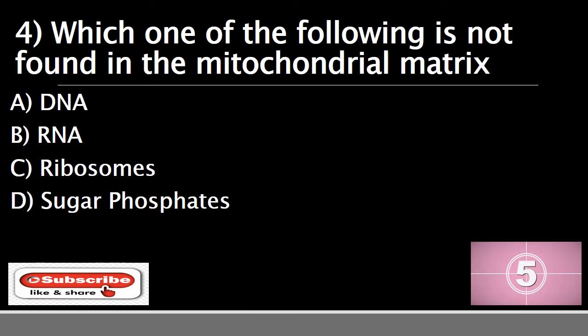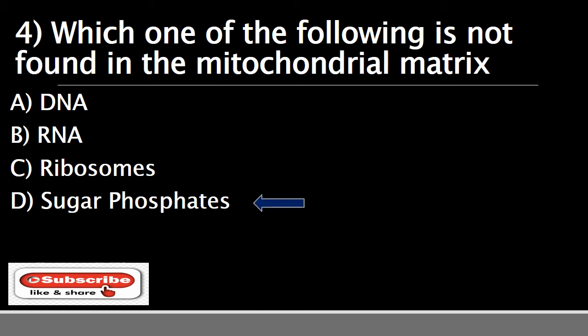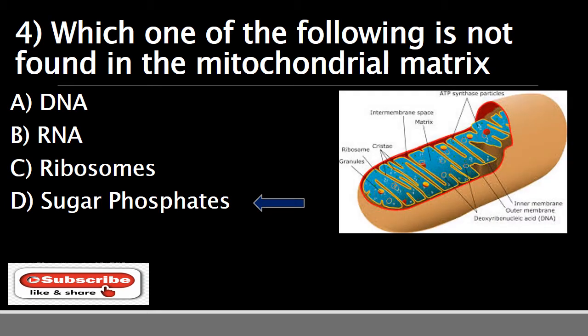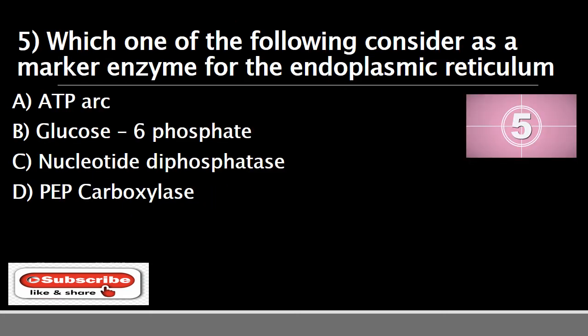Question number four: which one of the following is not found in the mitochondrial matrix? The options are A) DNA, B) RNA, C) ribosomes, or D) sugar phosphatase. The correct answer is D) sugar phosphatase. Sugar phosphatases are phosphoric acid esters of monosaccharides that occur as intermediates in carbohydrate metabolism, which are absent in mitochondria. DNA, RNA, and ribosomes are all present in mitochondria.